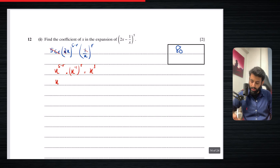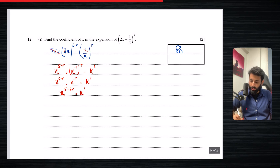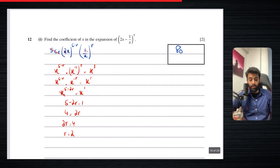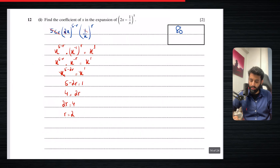This becomes x^(5−r) · x^(−r) = x^1. Same bases being multiplied means powers get added. We ignore the bases and compare the powers: 5 − 2r = 1, which means 4 = 2r. So 2r = 4, r = 2. At this point, do not get carried away and think this is the final answer.